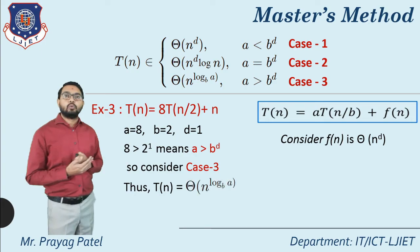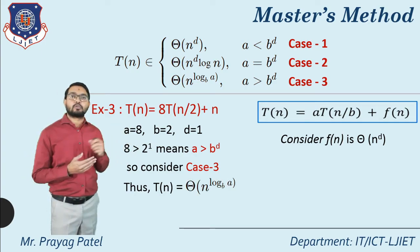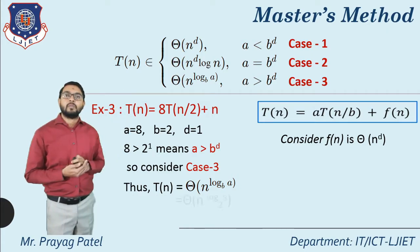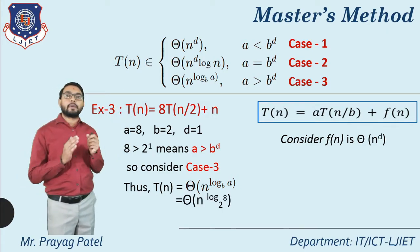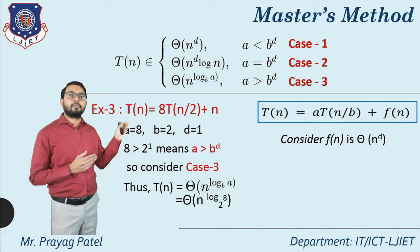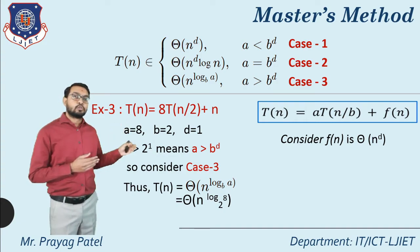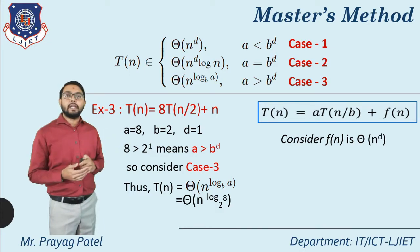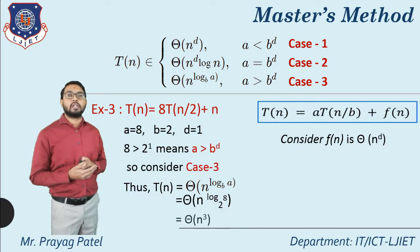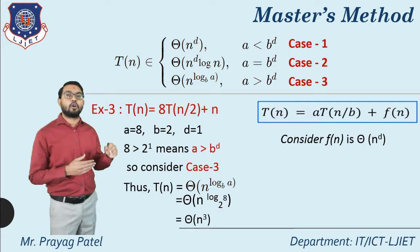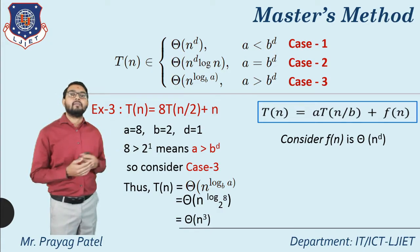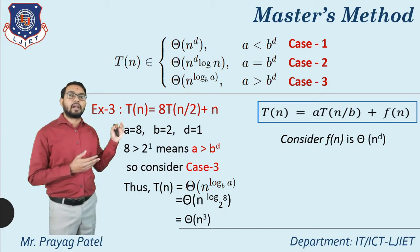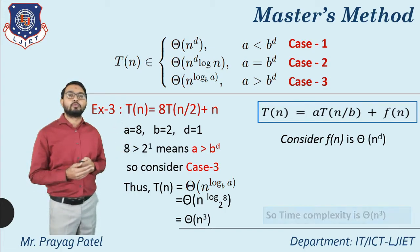According to case 3, T(n) = Θ(n^(log a base b)). Putting the values: Θ(n^(log 8 base 2)). Now 8 = 2³, so log 8 base 2 = 3. Therefore our answer is Θ(n³).